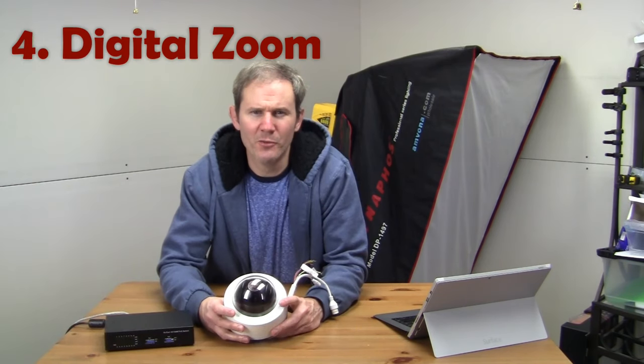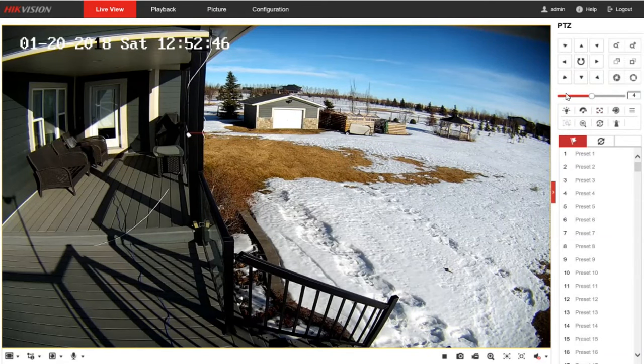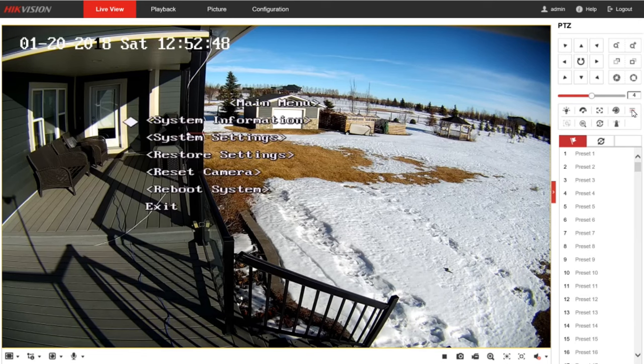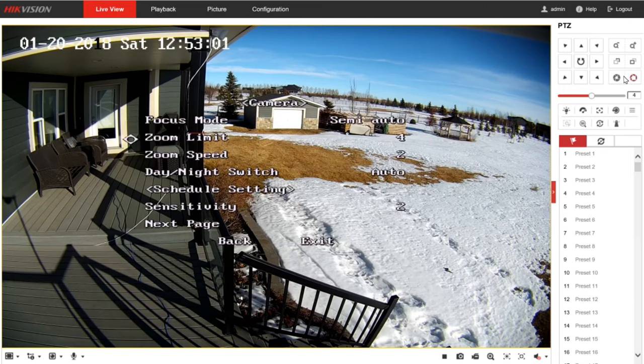So next, let's talk about digital zoom. Digital zoom is not mechanical. There's no optics moving. It's simply taking the existing image and cropping it. So to set your camera up for this, you're going to need to go into your camera setup on the live view page, click on the menu button, and then navigate down to digital zoom and change the maximum value to 64 in this case.